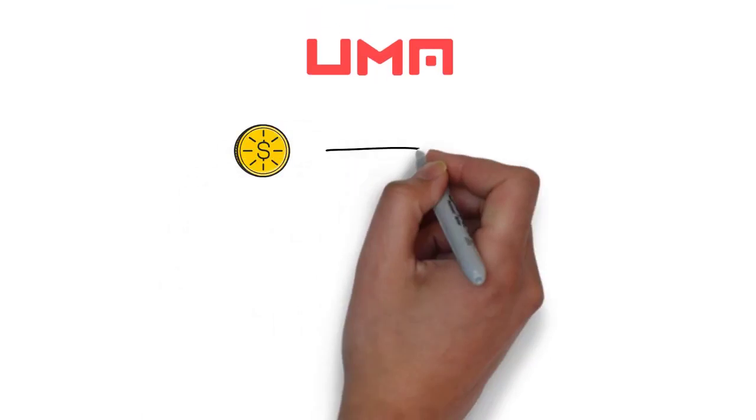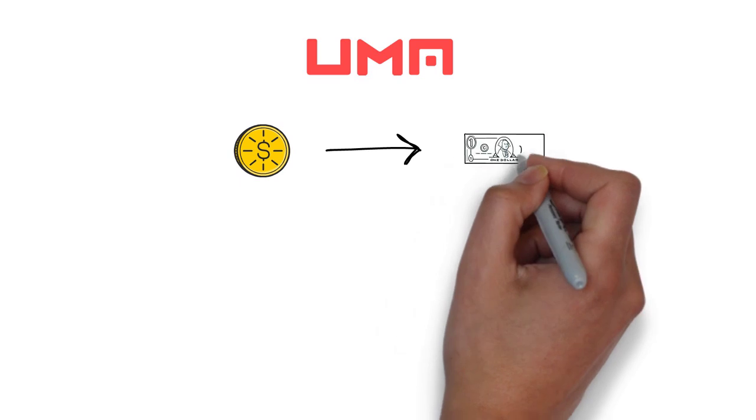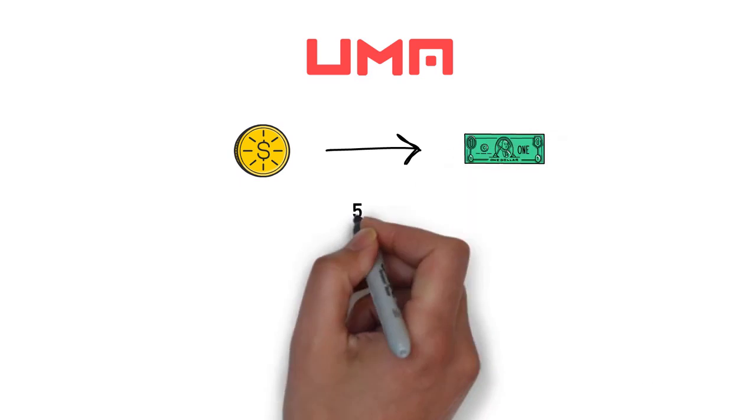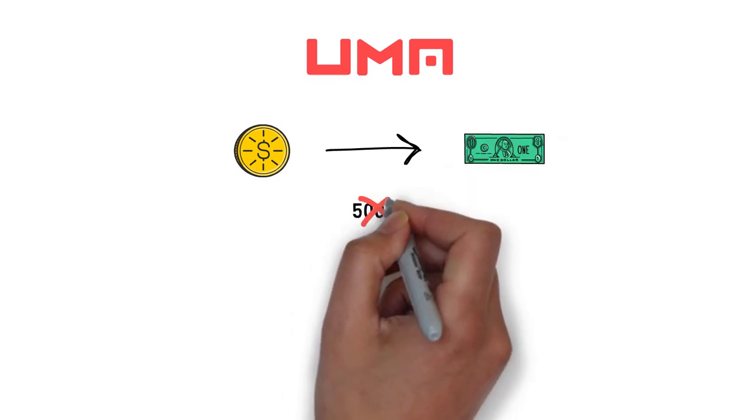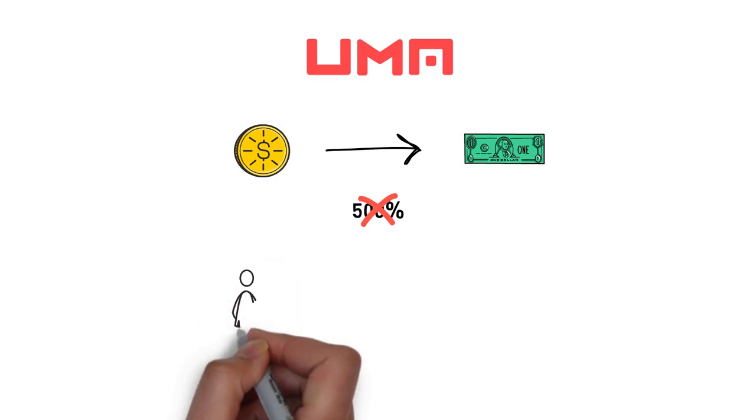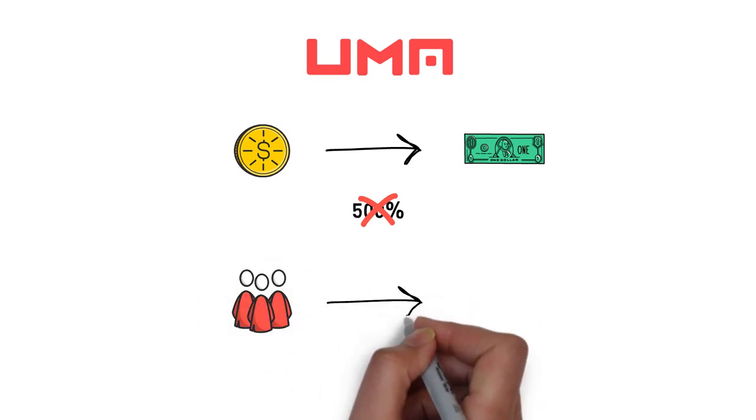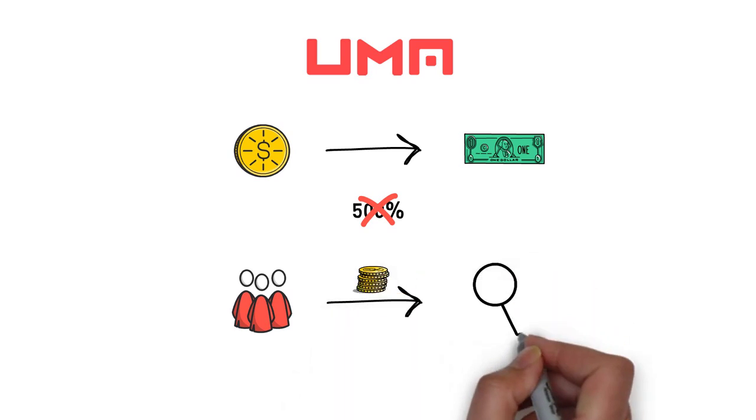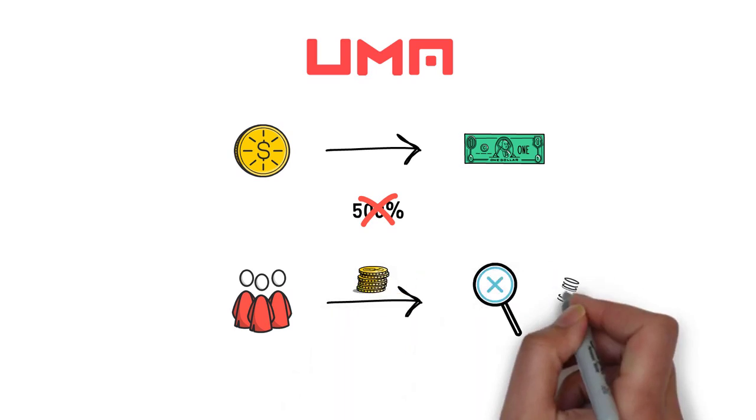UMA is another protocol that enables the creation of synthetic assets. The main difference here is that UMA, instead of highly over collateralizing the protocol, relies on liquidators, who are financially incentivized to find improperly collateralized positions and liquidate them.